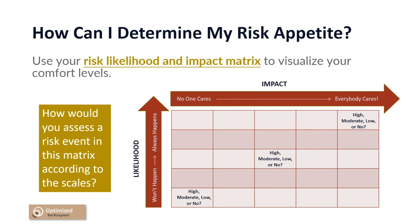Ask yourself these questions for each box. It is helpful to color-code the boxes to align with the respective answer for high, moderate, low, or no risk. Many people use a red, amber, green scale, but you can use any color code that works best for you. Once you have color-coded the combinations, you have defined your risk levels and, by default, your appetite levels.